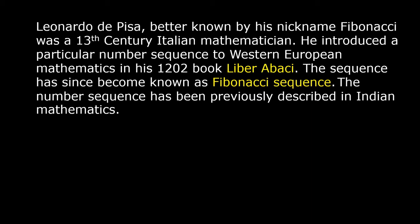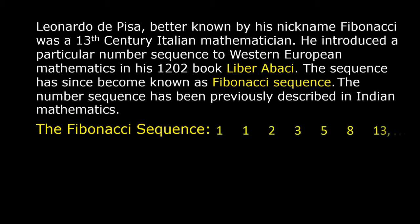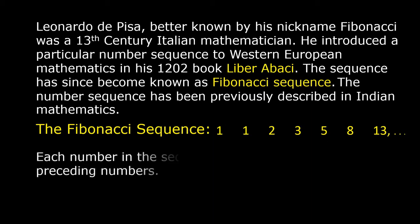The number sequence had been previously described in Indian mathematics. The first seven terms in the Fibonacci Sequence are 1, 1, 2, 3, 5, 8, and 13. Each number in the sequence is the sum of the two preceding numbers.